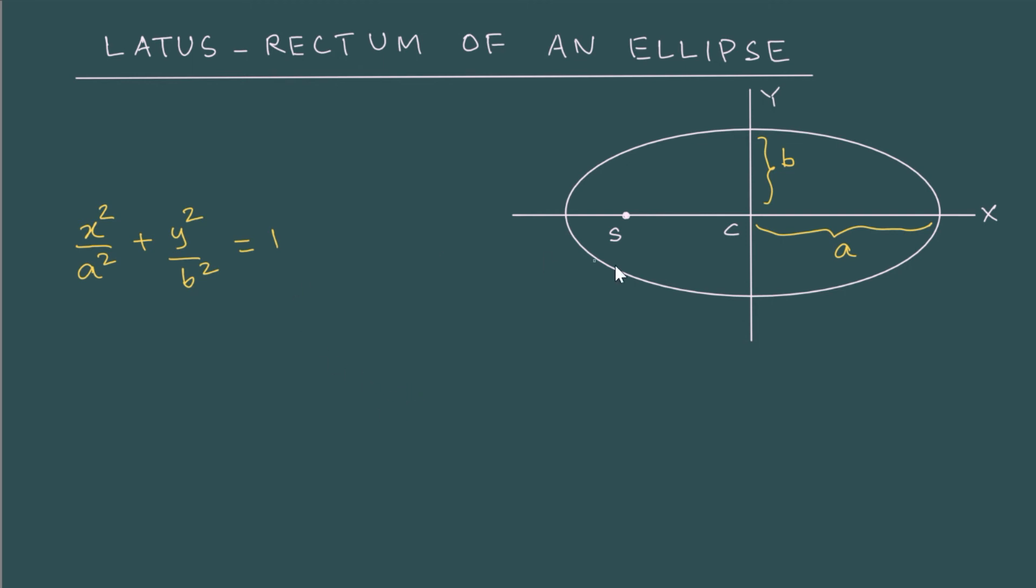What is a latus rectum? Latus rectum is the length of the focal chord that passes through the focus of the ellipse and perpendicular to the axis. So this is the focal chord perpendicular to the axis. So we are getting the length of the focal chord here.